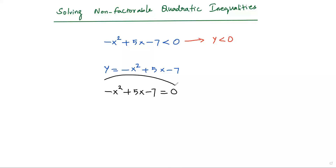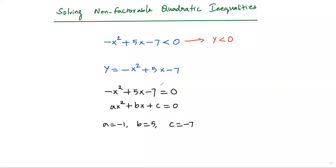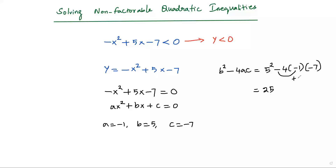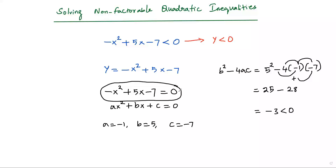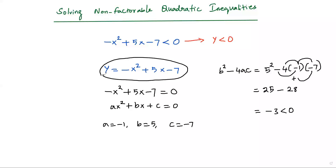Comparing to standard form, we get a = -1, b = 5, c = -7. To check for solutions, we find the discriminant b² - 4ac: 5² - 4(-1)(-7) = 25 - 28 = -3, which is less than 0. Since the discriminant is less than 0, this quadratic equation has no solution, meaning the quadratic function has no zeros. The parabola never intersects the x-axis.